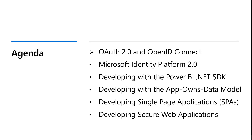Let me quickly cover the agenda of the different videos in this series. This is part one, covering terminology and concepts for OAuth 2.0 and OpenID Connect. Part two looks at the Microsoft Identity Platform and the Microsoft Authentication Library. Part three covers developing with the Power BI .NET SDK for C# code. Part four covers the app owns data model — acquiring app-only tokens and embed tokens. Parts five and six cover user owns data: part five uses the single page application model with MSAL JavaScript, and part six covers the more secure authorization code grant flow.